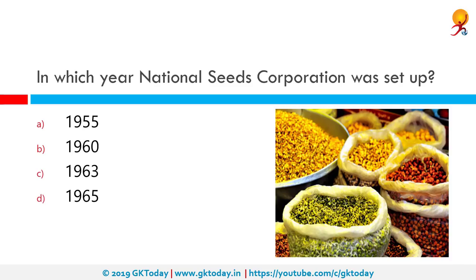In which year was the National Seeds Corporation set up? It was set up in 1963. The National Seeds Corporation Limited is a Schedule B Mini Ratna Category 1 company wholly owned by the Government of India under the Department of Agriculture, Cooperation and Farmers Welfare. NSC was established in March 1963 to undertake production of foundation and certified seeds.